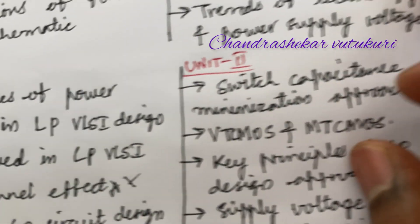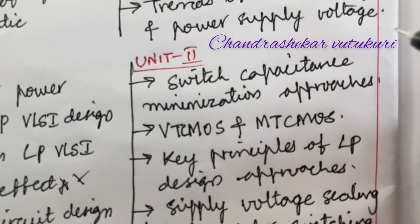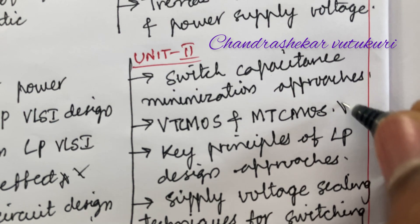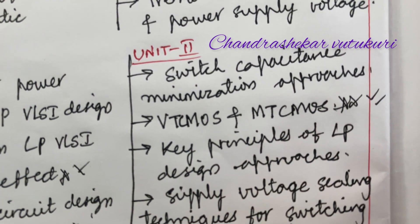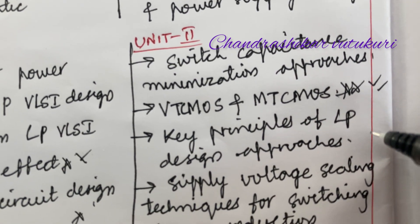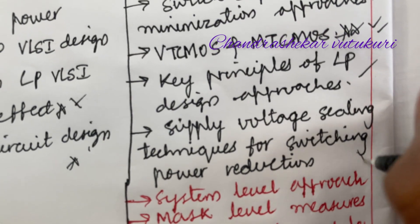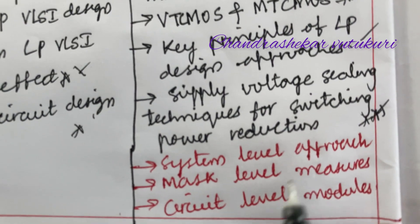Later, Unit 2 is all about the switch capacitance and minimization approaches, VTCMOS and MTCMOS and the differences along with neat sketch. The key principles of low power design approaches and the supply voltage scaling technique for switching power reduction is also said to be the topmost question.